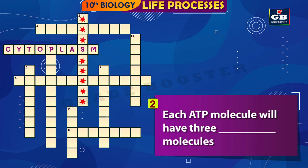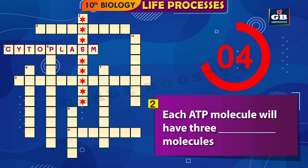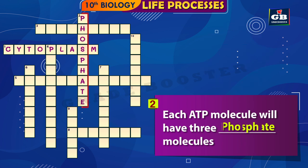2 Down: Each ATP molecule will have three dash molecules. The answer is phosphate. Each ATP molecule will have three phosphate molecules.